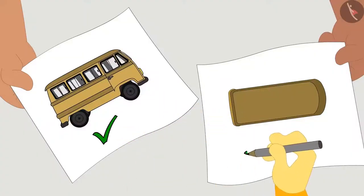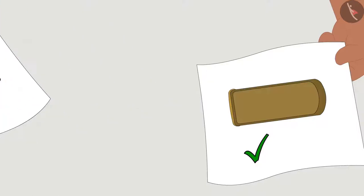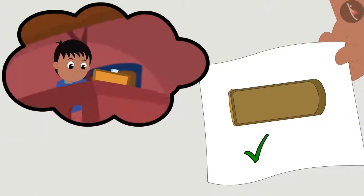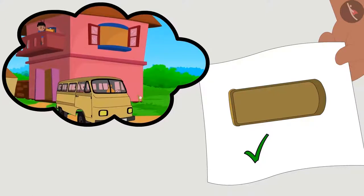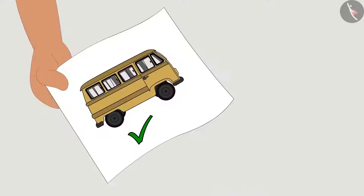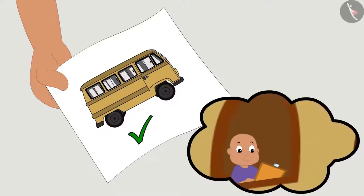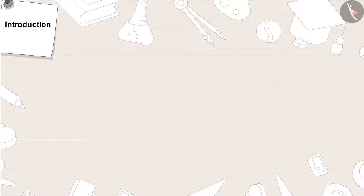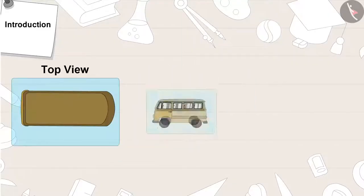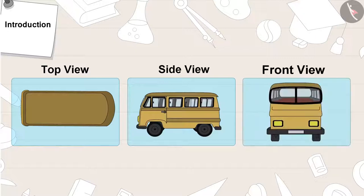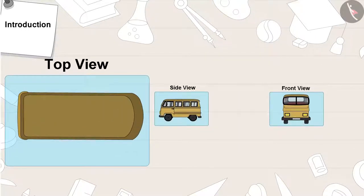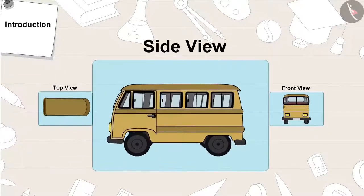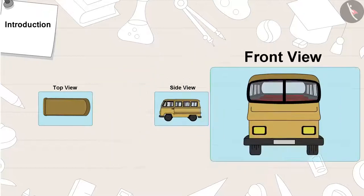In fact, the drawings of both Raju and Bablu are correct. Raju had drawn the top view of the bus, whereas Bablu saw the bus from the side while drawing it. All objects can be viewed from three different sides: from above, that is top view; side view; and front view.